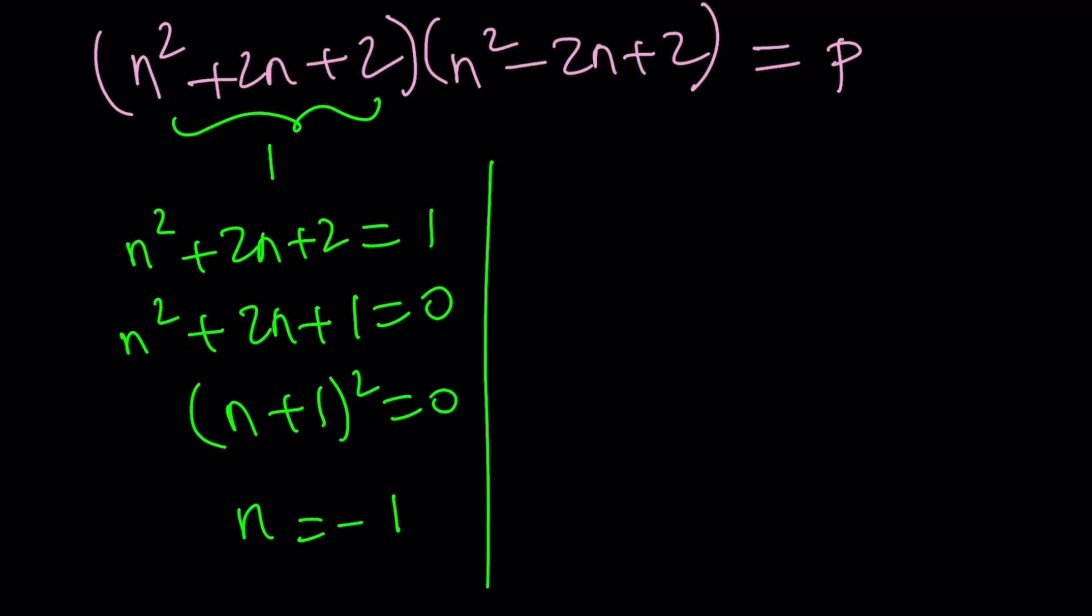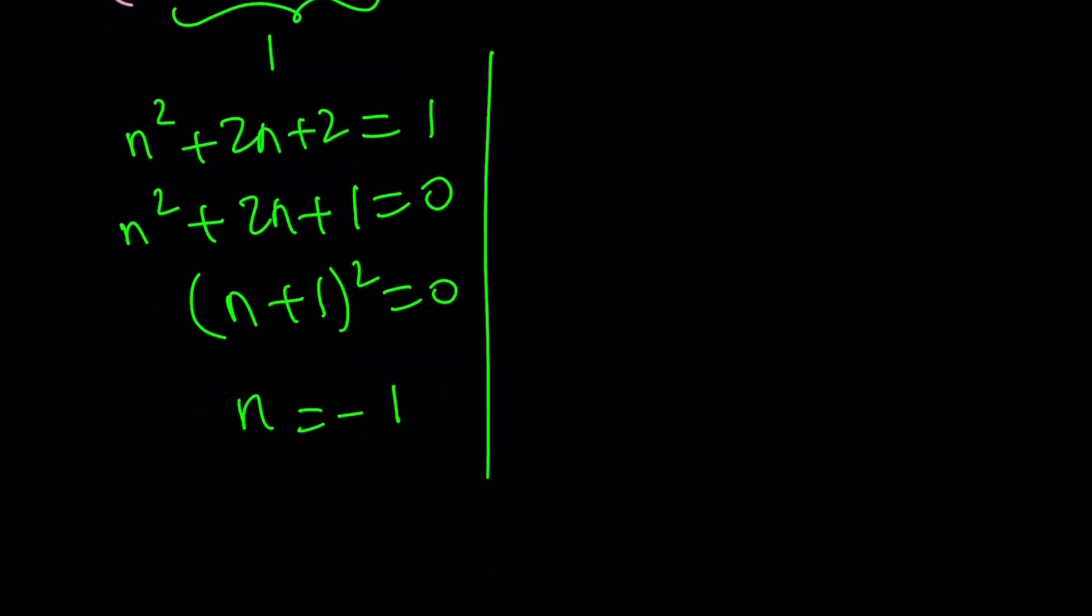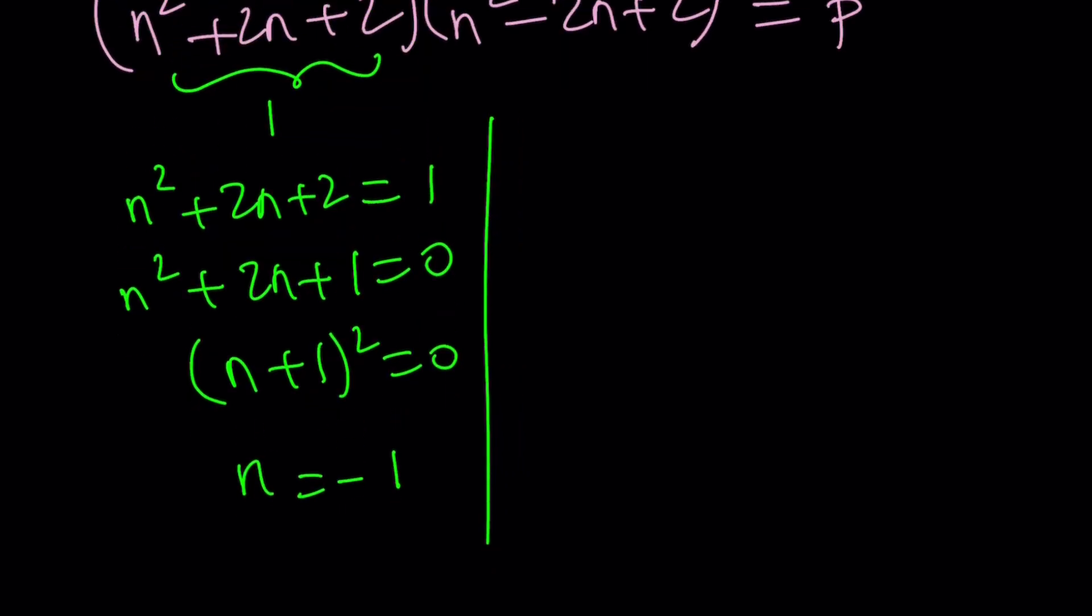So if this is 1, then this needs to be p, right? And we don't care about the p, but is that really going to be a prime number? Let's go ahead and check. If n is equal to negative 1, the second factor is n squared minus 2n plus 2. That is going to be 1 plus 2 plus 2, and that is going to be 5. Okay great. And 5 is a prime number, so we're all good.